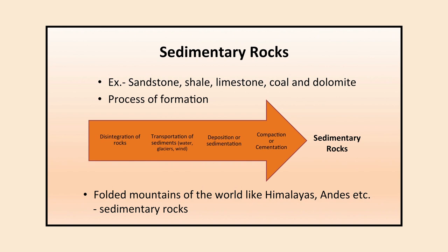Some examples of sedimentary rocks are sandstone, shale, limestone, coal, and dolomite. The process of formation can be seen in the diagram: first there is disintegration of existing rocks, then these result in sediments, then sediments are transported through water, glaciers, or wind, then deposition or sedimentation takes place, then compaction or cementation takes place, and finally sedimentary rocks are formed. Various folded mountains of the world like the Himalayas and the Andes are formed of sedimentary rocks.